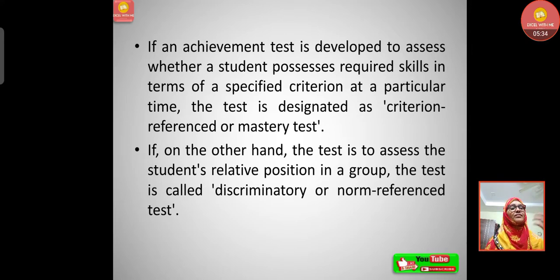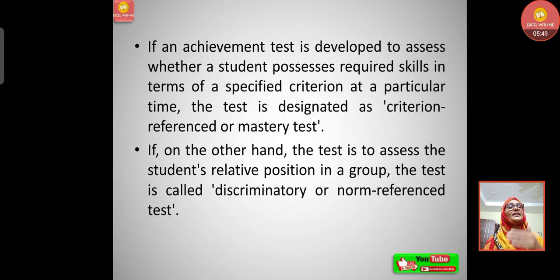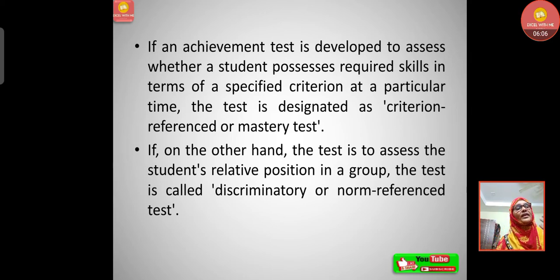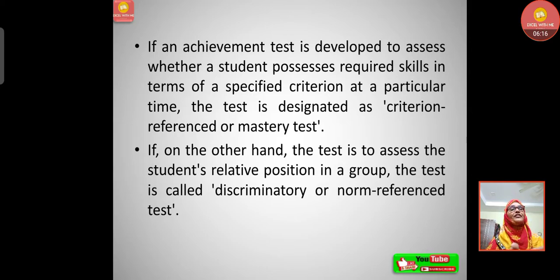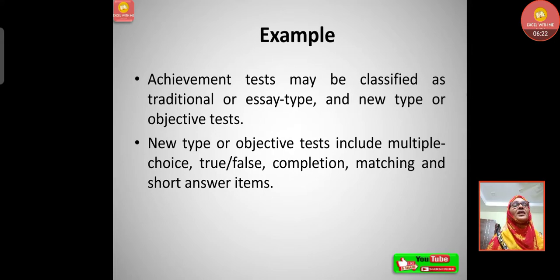About the criterion-referenced test we have discussed in the previous video — you can watch that video to understand what a criterion test is. On the other hand, if the test is to assess the student's relative position in a group, the test is called a discriminatory or norm-referenced test. Criterion-referenced tests assess achievement against specific criteria, while norm-referenced tests compare a student's relative position among other students.